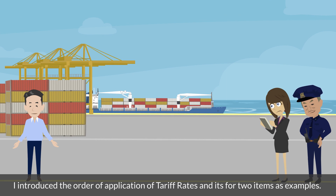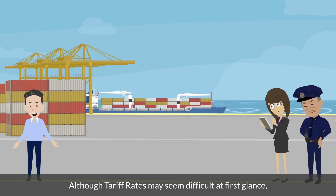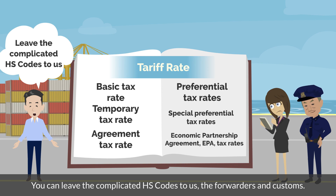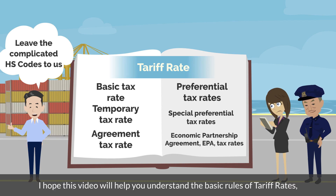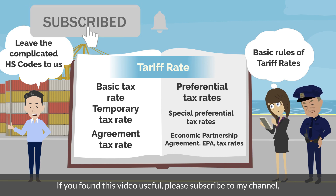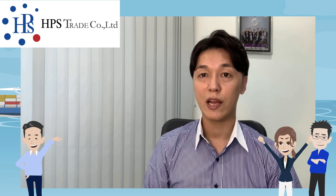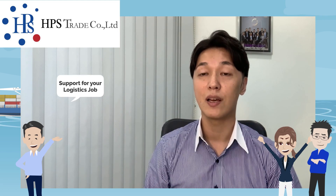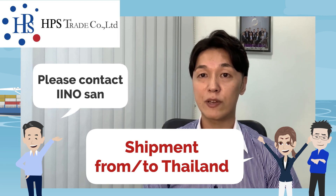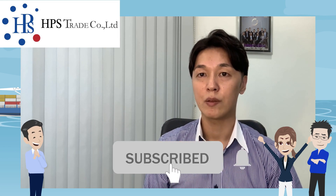In this video, I introduced the order of application of tariff rates with two items as examples. Although tariff rates may seem difficult at first glance, you only need to remember the six tariff rates introduced in this video. You can leave the complicated HS codes to us, the forwarders and customs. I hope this video helps you understand the basic rules of tariff rates. If you found this video useful, please subscribe to my channel, like it, and share on social media. In this channel, I explain international logistics knowledge. If you have any shipment from Thailand or to Thailand, please feel free to contact Ino-san anytime.